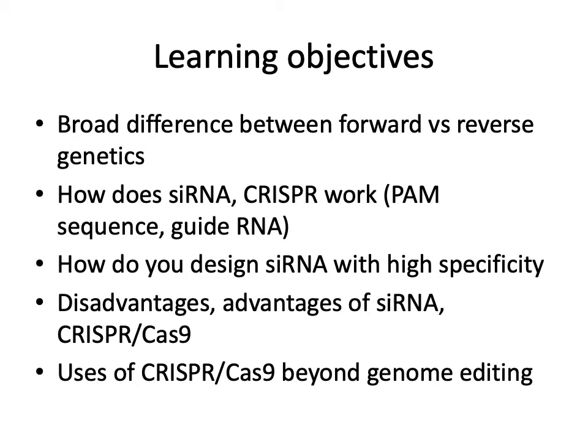You really want to know what considerations you need to think about when you're trying to design siRNA that target specific mRNA with high specificity. You need to know about considerations like how unique a particular sequence is for a particular gene, or what happens when you have gene duplications or alternative splicing.